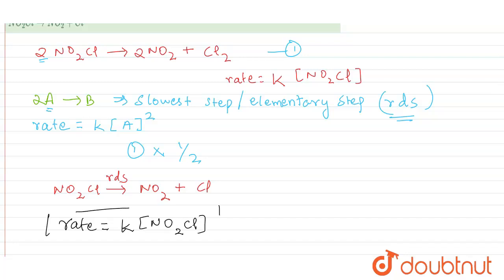the rate R is equal to K times NO2Cl. So from this we can say that the elementary step or the rate determining step or the slowest step is NO2Cl giving NO2 plus Cl.